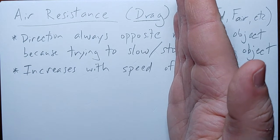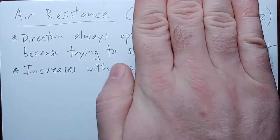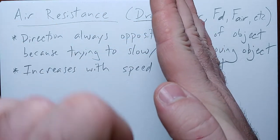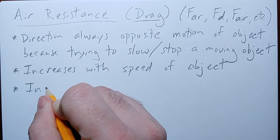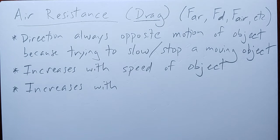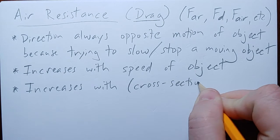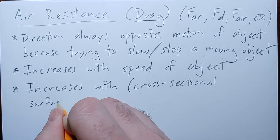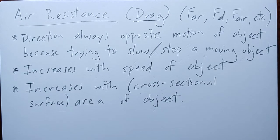If my hand is held upright and the car drives forward, the entire palm of my hand is the surface area the air molecules are going to hit. If I flip my hand flat, now there's just a little surface area on top of my hand that air molecules can hit. So air resistance increases with the cross-sectional surface area of the object — as that area increases, the amount of air resistance we experience increases.